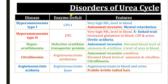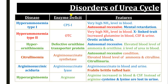The next disorder is argininosuccinic aciduria, due to deficiency of argininosuccinate lyase enzyme. Because of this, argininosuccinate accumulates in the blood and urine, and this disorder is associated with fragile, brittle hair. The final disorder is hyperargininemia, due to deficiency of the last enzyme of the urea cycle, arginase. Because of this, there is an increased level of arginine in the blood and CSF. In these patients, cysteine and lysine are lost in the urine instead of arginine.